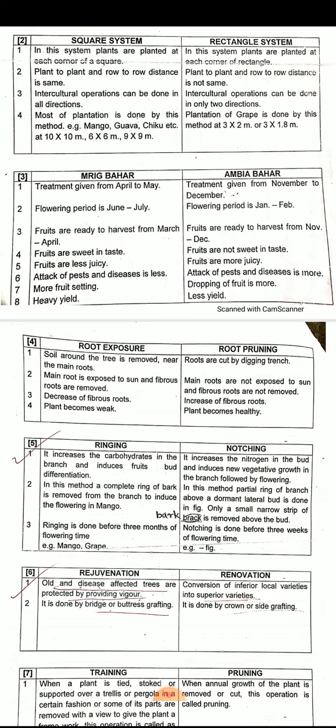In Mrig Bahar, during fruit setting there are no rains or storms, so fruit setting is high. In Ambiya Bahar, the fruiting period coincides with summer, causing storms, heavy winds, and rains, leading to more fruit drop and less yield. Due to more fruit setting, Mrig Bahar gives heavy yield, whereas Ambiya Bahar yield is very less.